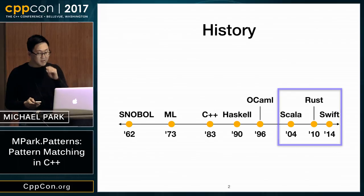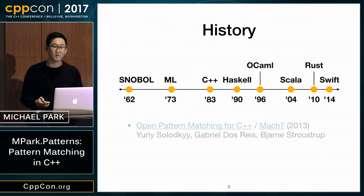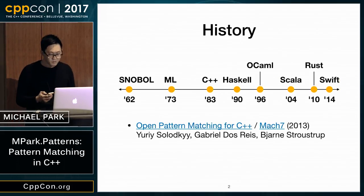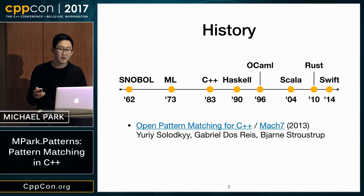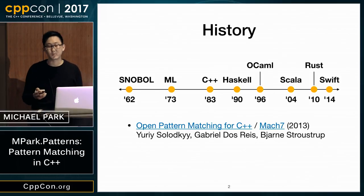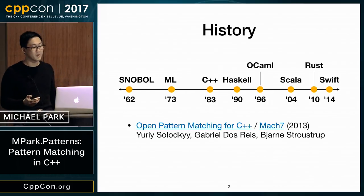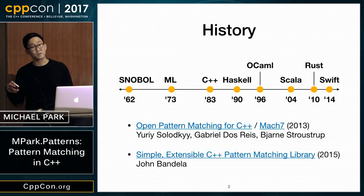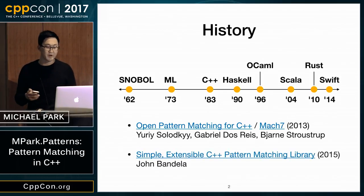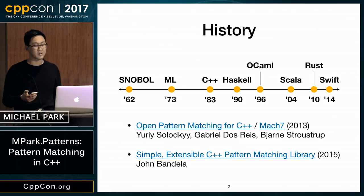For C++, there have been two efforts I know of towards introducing pattern matching. The first is a paper called 'Open Pattern Matching for C++' by Yuri, Gabby, and Bjarne, published in 2013, which shipped with a library solution called Mach7 that involved a lot of macros. In 2015, two years ago at this conference, John Bandela introduced SimpleMatch — a C++14 library solution with no macros.